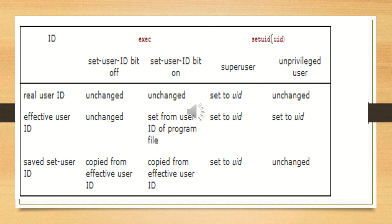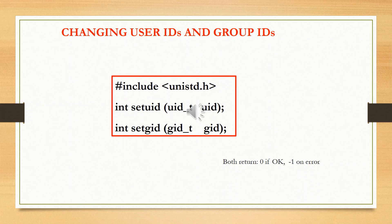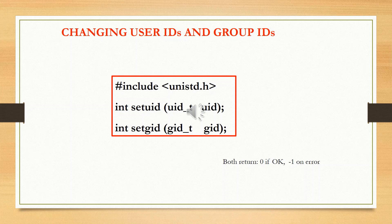The table in this slide shows a summary of the various ways these three user IDs can be changed. To change user ID and group IDs, we use two different functions. The setuid function returns an integer — zero if the user ID is set successfully, or minus one if there is an error. The setgid function also takes a single parameter gid and returns zero if successful, or minus one to indicate an error in setting the group ID.